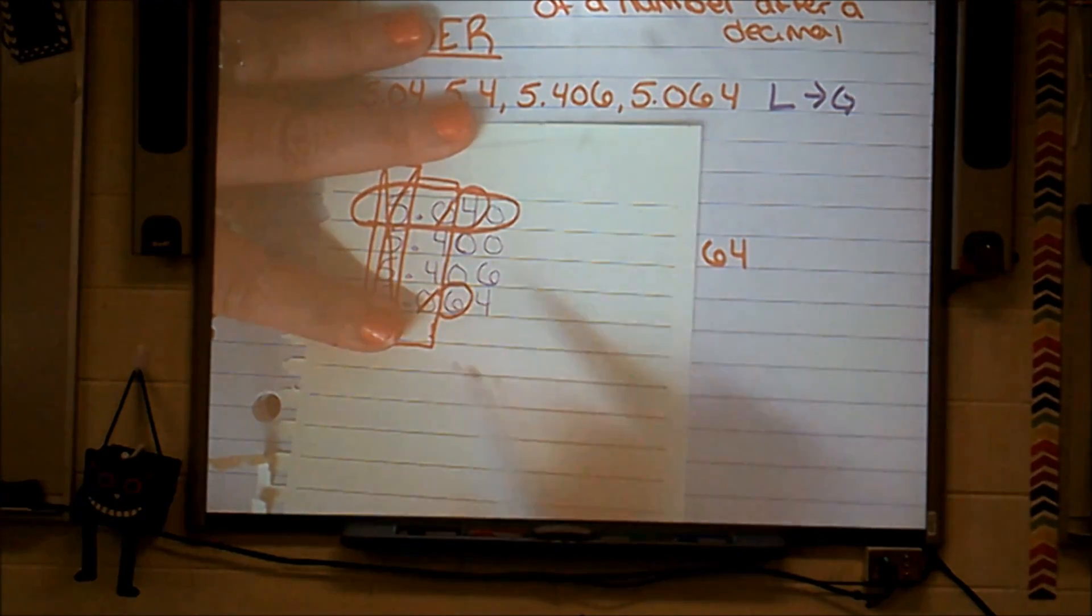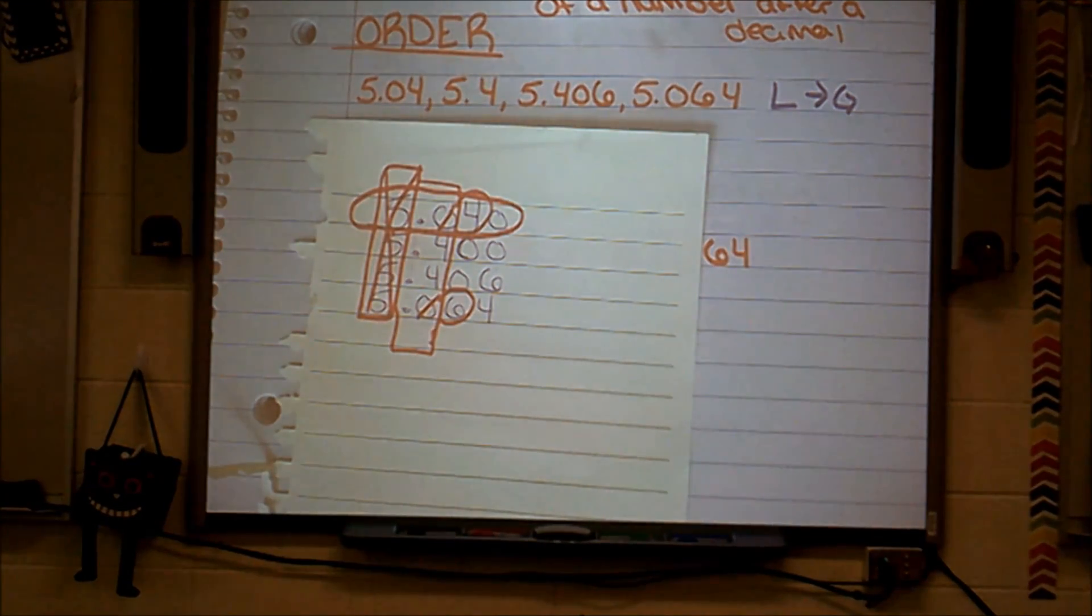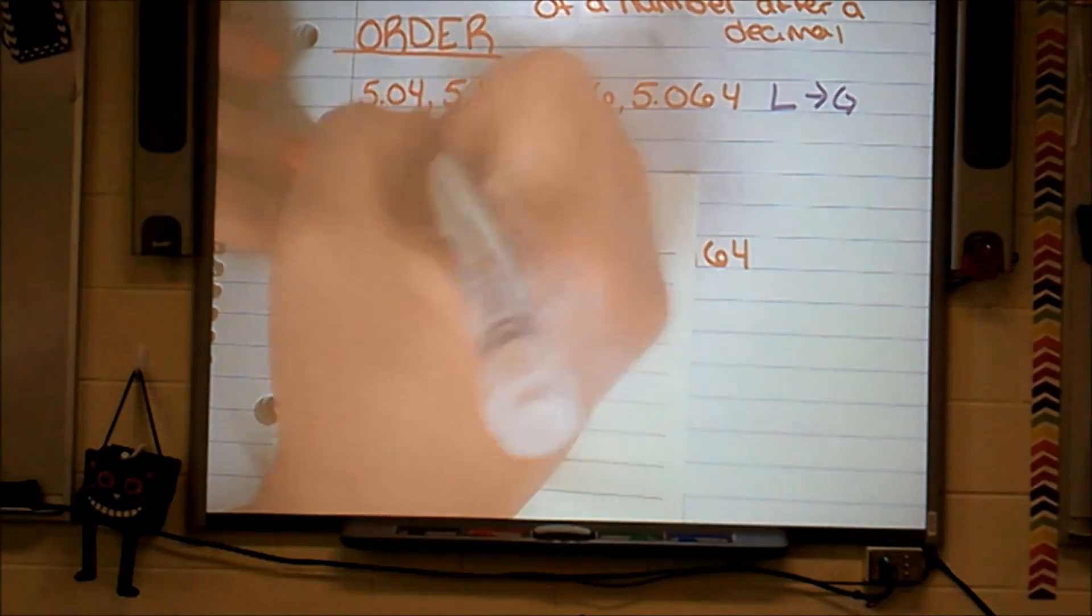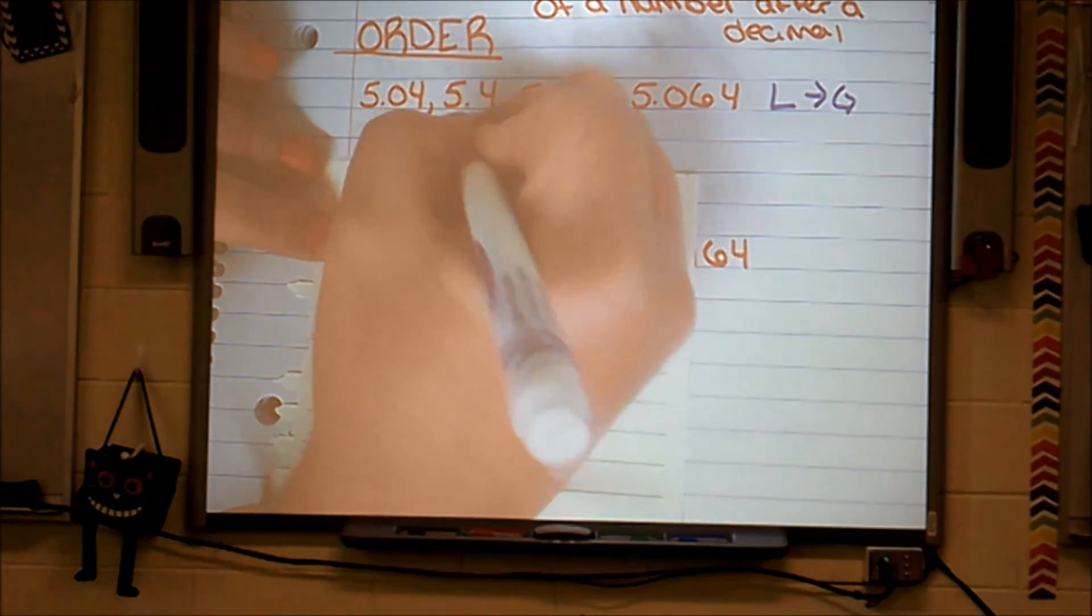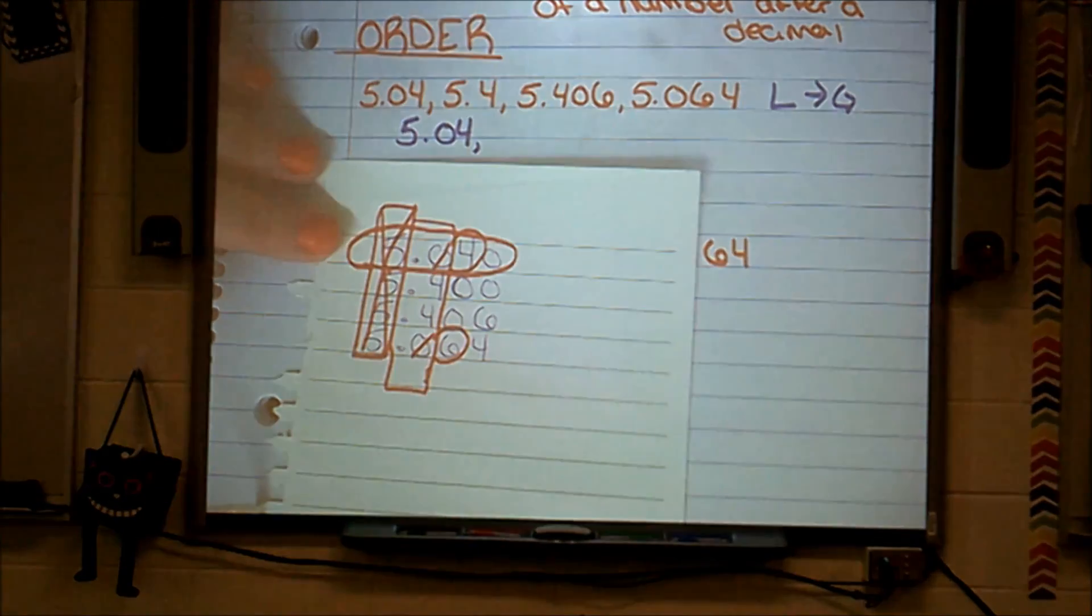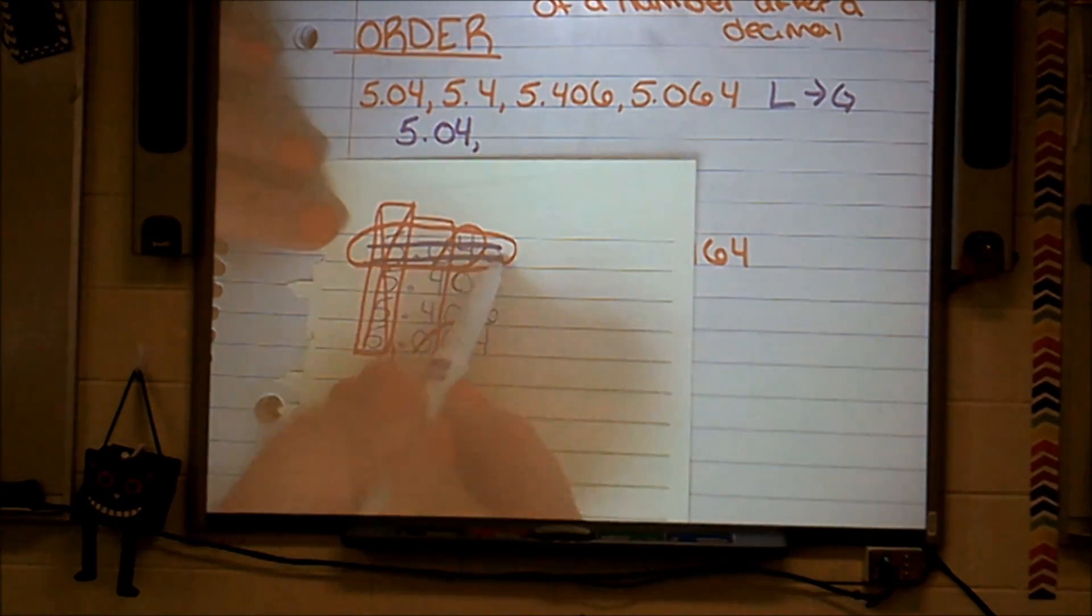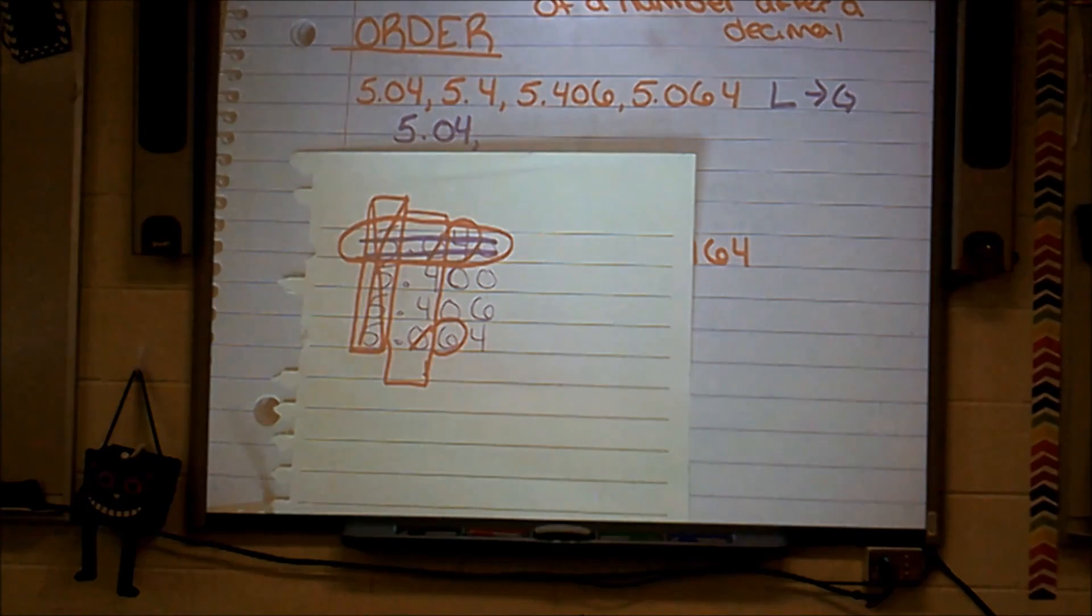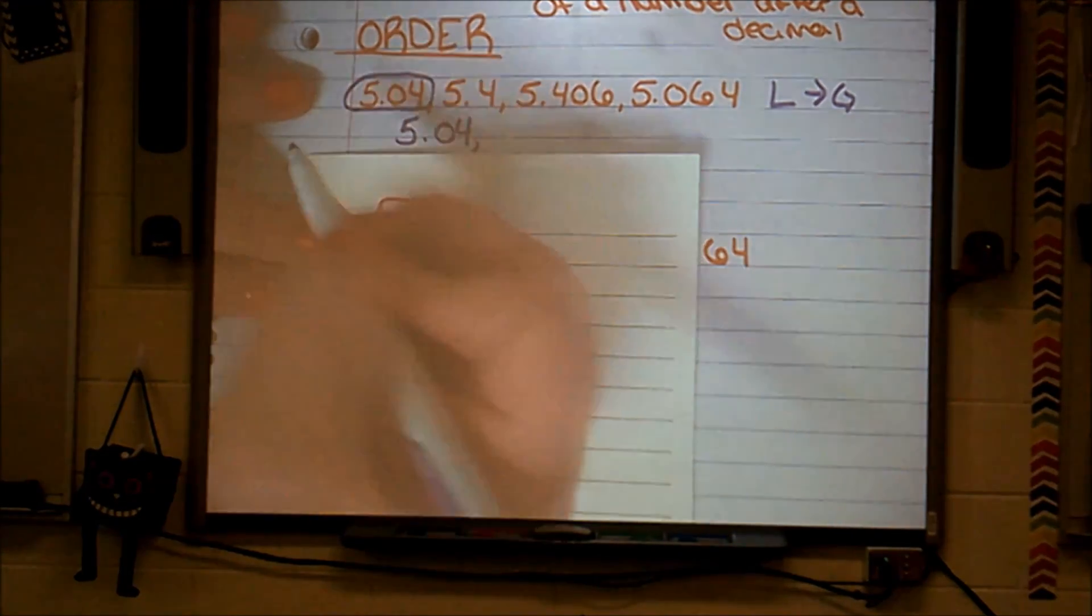That tells me that this whole number is my smallest number listed here. Which, if you can read through the scribble scrabble, is 5 and 64 hundredths, which is my first number. So on the lines provided below it, I'm going to write 5 and 64 hundredths. Now I'm going to do a couple more things. I'm going to cross it off of my list so I don't bother with it anymore. And I'm going to circle it on here so I know I've used it.